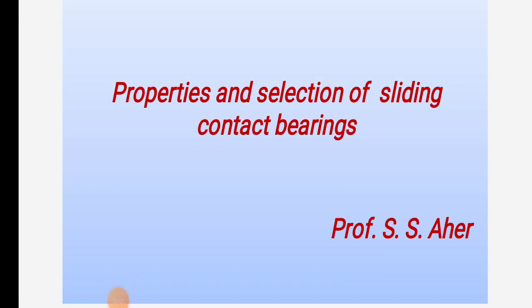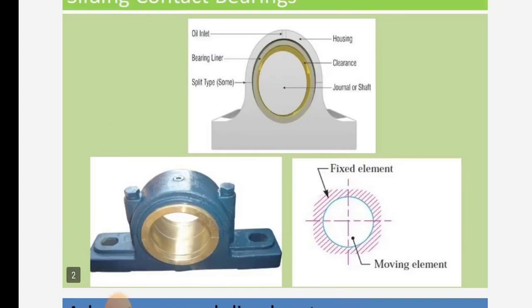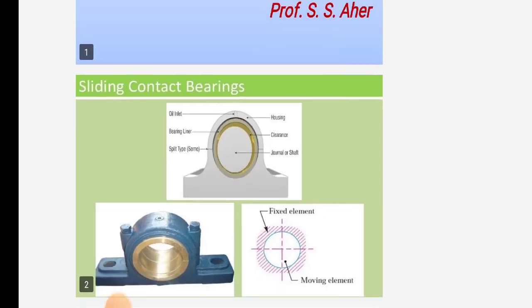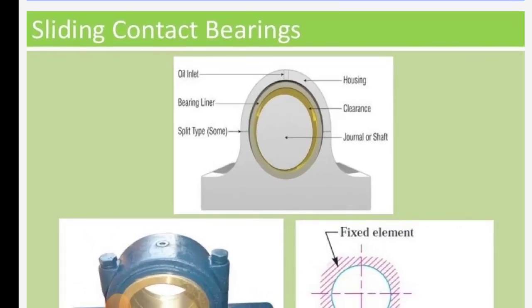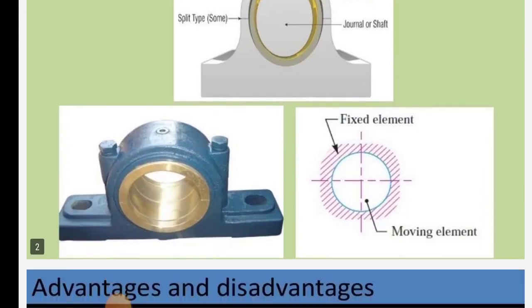Welcome to the topic of properties and selection of sliding contact bearings. This is a diagram of sliding contact bearings where oil inlet, housing, bearing liner clearance, split type, and journal of shaft are shown. This is a fixed element and this is a moving element.